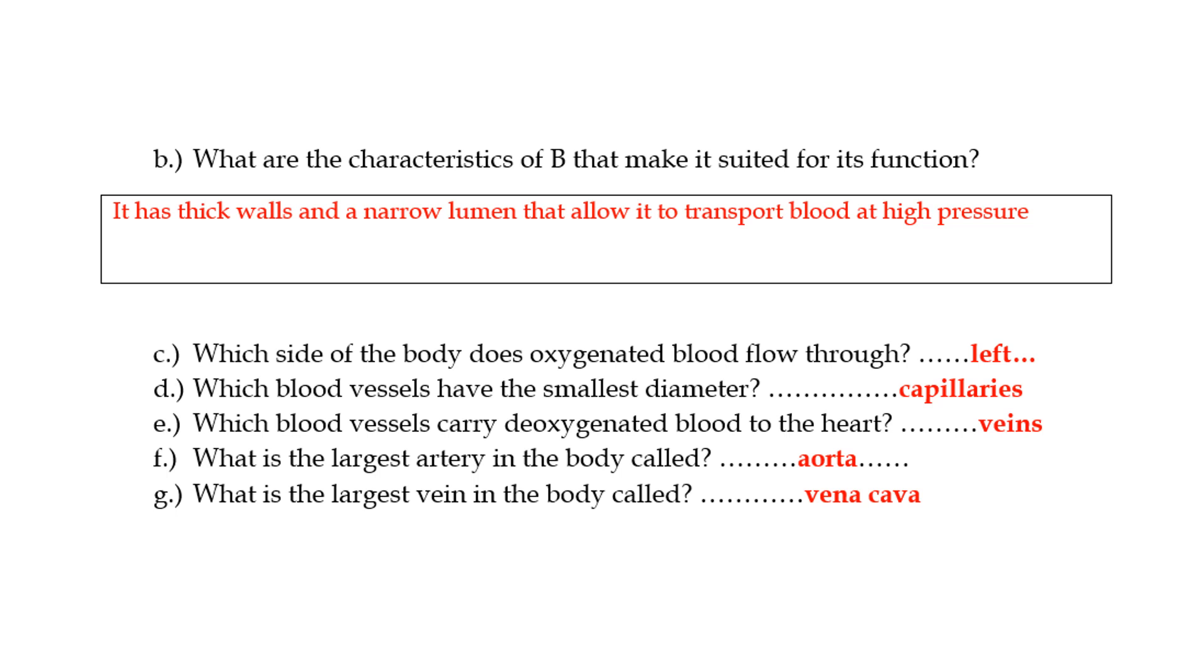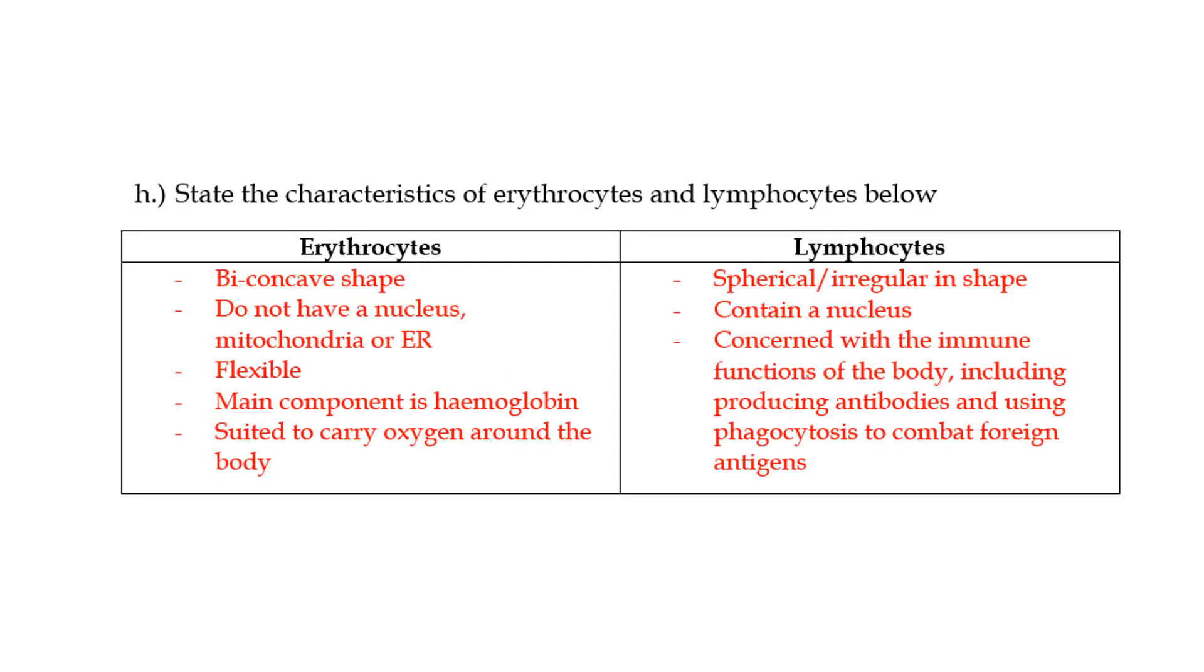Which blood vessels have the smallest diameter? Those would be the capillaries. They're very tiny. Which blood vessels carry deoxygenated blood to the heart? That would be the veins. But if you're speaking specifically about the biggest vein, for example, that would be the vena cava. And what is the largest artery in the body? It is the aorta.